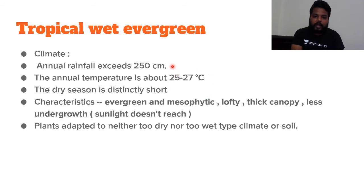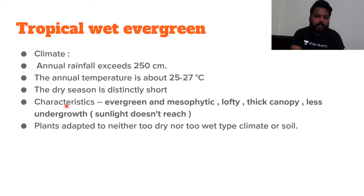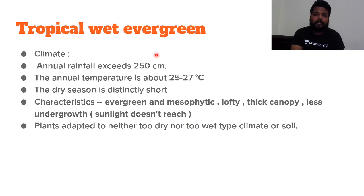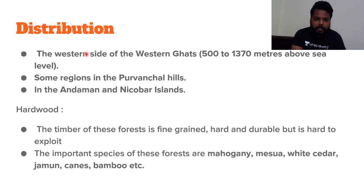The temperature in tropical wet evergreen regions is around 25 to 27°C. The dry season is distinctly short. Characteristics: trees are evergreen and mesophytic, lofty with thick canopy, meaning denseness is very high and undergrowth is less. Sunlight doesn't even reach the surface, so agriculture is not possible in these forests. Plants are adapted to neither too dry nor too wet conditions. Distribution: wherever rainfall exceeds 250 cm.